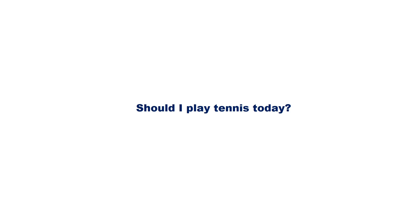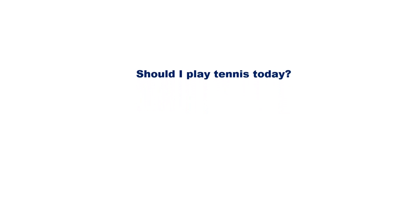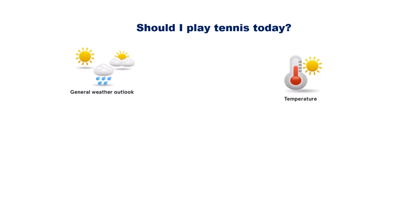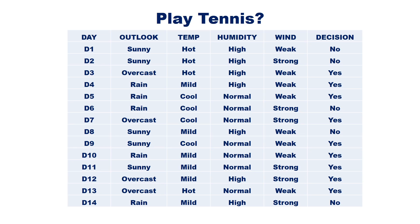We will consider a classical example from machine learning: should I play tennis today? The decision depends on four characteristics of a day: general weather outlook, which can be either sunny, overcast, or rainy; temperature, which is either hot, mild, or cold; humidity, high or normal; and wind, strong or weak. For training the model we have tracked decisions on previous days, with a total of 14 training examples depicting weather characteristics and the decision on each day.